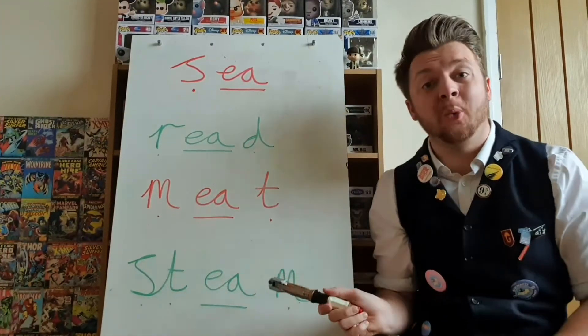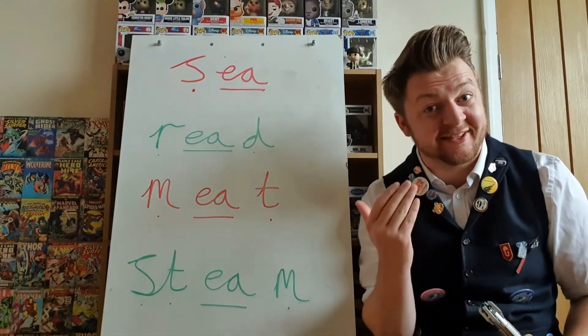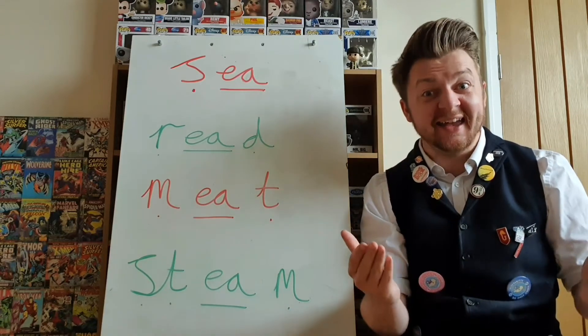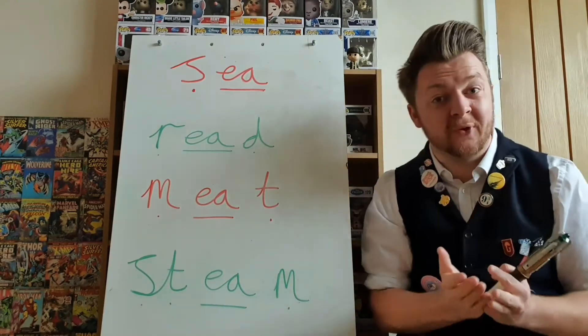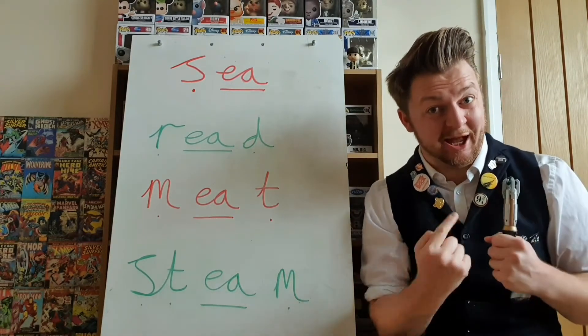And today we're going to learn about the sound E represented by the letters EA, as in 'I like to go to the seaside'. Shall we see if we can read some words that have the EA grapheme in? Brilliant! Let's see if we can find some. Ta-da! I've found four words that all have the EA grapheme in, and EA represents the sound E. Great job. Shall we see if we can read these words with the E sound in? Brilliant! Let's do it!